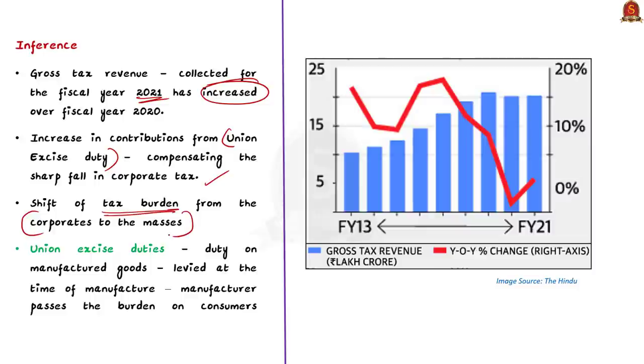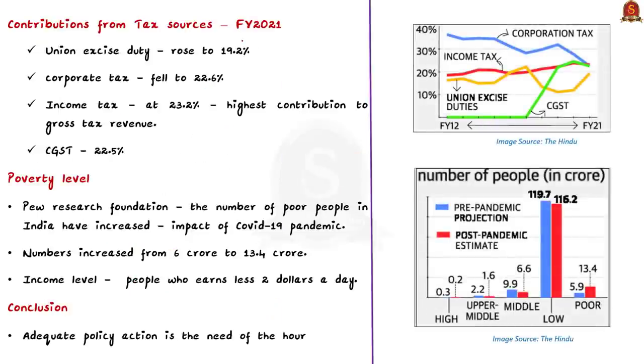This is why the data point is titled Shifting the Tax Burden. The burden of taxation has shifted from corporates to the common people. Now, let us see what is union excise duty. Union excise duty is a type of indirect tax which is put on goods manufactured in India. Union excise duties are levied in accordance with the rates mentioned in Schedule 1 and Schedule 2 of the Central Excise Tariff Act 1985. This tax is a duty on manufactured goods which is levied at the time of manufacturing. But however, the burden of taxation is passed on to the consumers by the manufacturer. So, finally, it is the common consumers who are paying this tax. As per the latest data, the contribution from union excise duty rose sharply to 19.2% whereas the corporate tax fell to 22.6% in the fiscal year 2021. In addition to this, the highest contribution to gross tax revenue came from income tax at 23.2% while central GST contributed 22.5% of it.